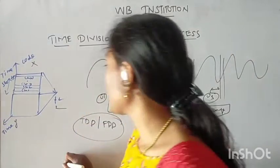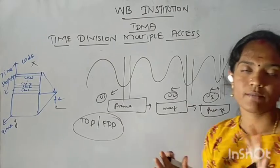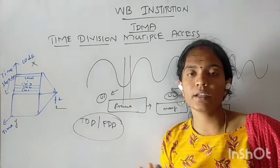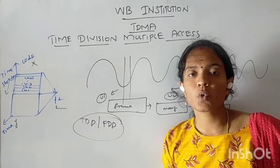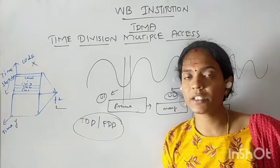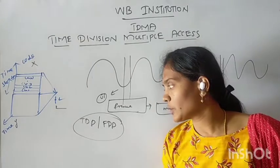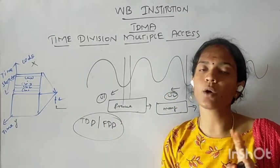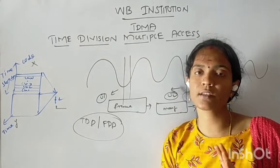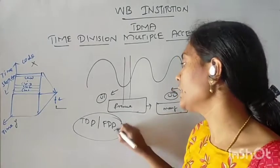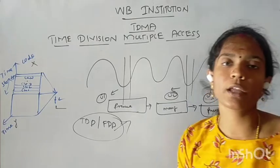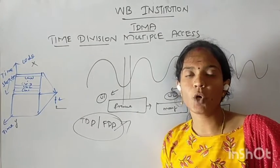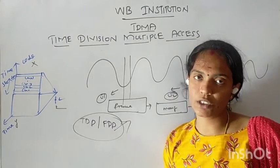TDD — single frames are used for both the forward link and uplink in the spectrum. In TDD, the forward link and uplink share a single frame. Data or information is carried in a single frame. In the buffer method, TDMA cannot do continuous transmission.